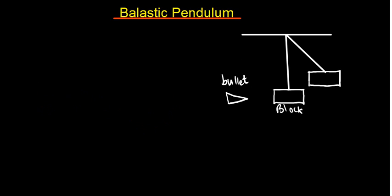Under ballistic pendulum with elastic collision, we have the bullet and the block. The block is always initially at rest, meaning the initial velocity of the block is always zero meters per second. The bullet is going to be moving with a certain initial velocity. After collision, if it is elastic collision, the block and the bullet are supposed to be moving separately.